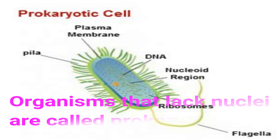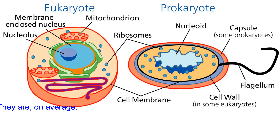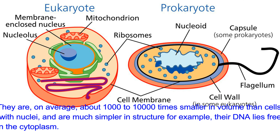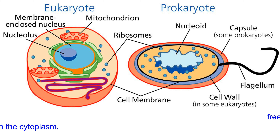Organisms that lack nuclei are called prokaryotes. They are on average about 1,000 to 10,000 times smaller in volume than cells with nuclei, and are much simpler in structure. For example, their DNA lies free in the cytoplasm.